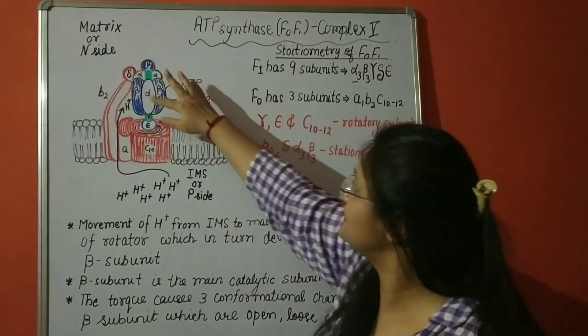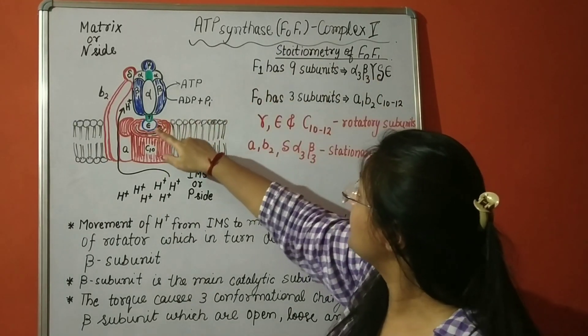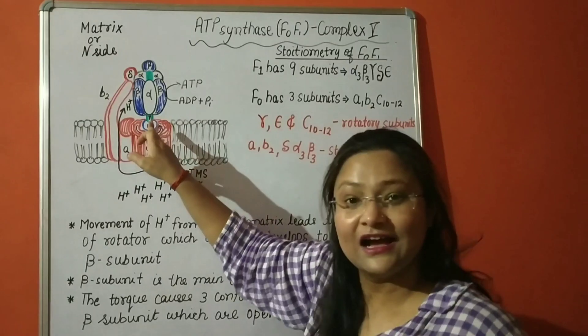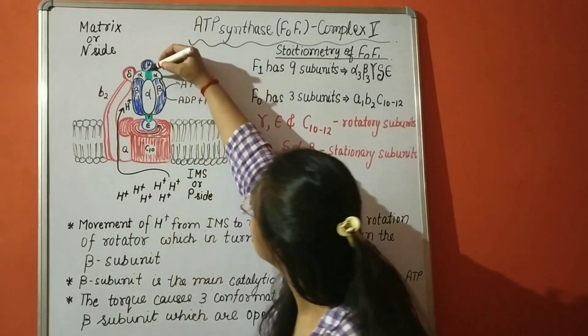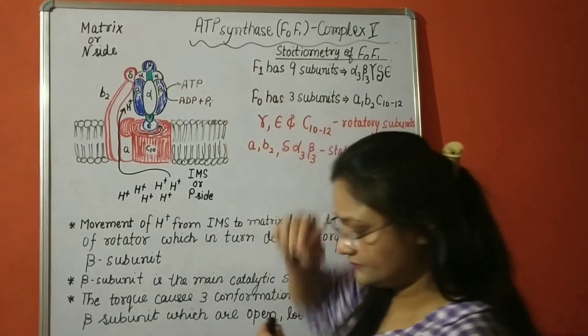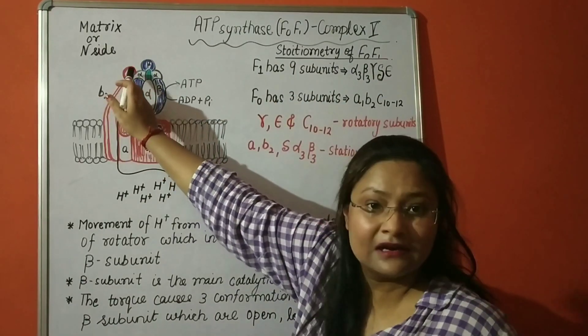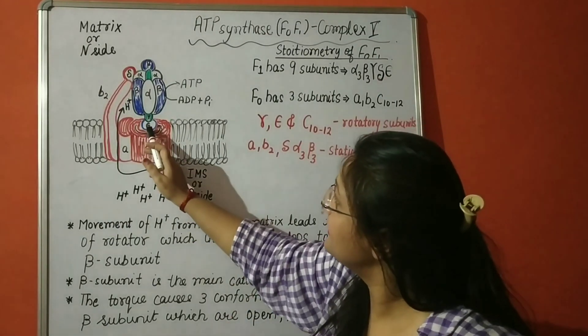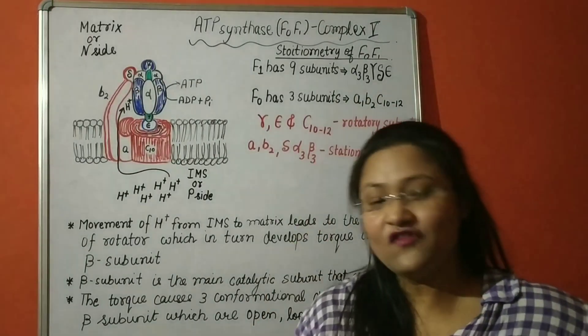F1 first. Let us discuss F1 subunit. F1 has 9 further subunits which has three alpha subunits, three beta subunits, so total is 6. And 7th is gamma subunit which is indicated in green color. It spans from here to here. And delta subunit here in red color, and epsilon subunit here in blue color. So these are 9 subunits of F1.